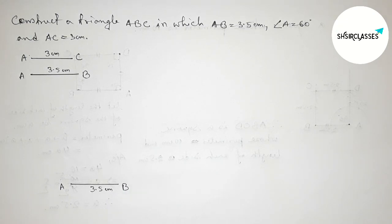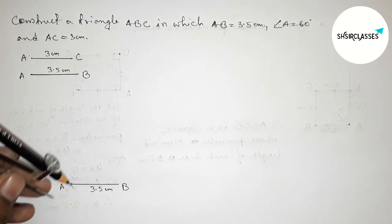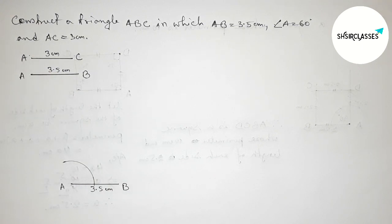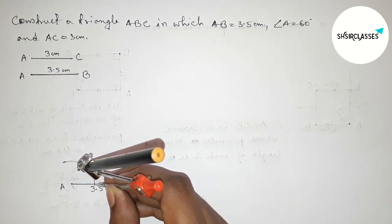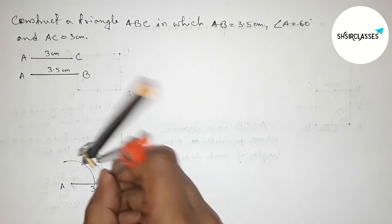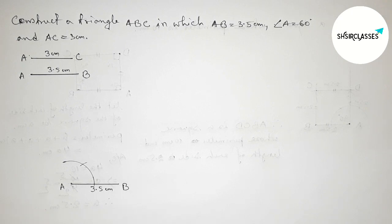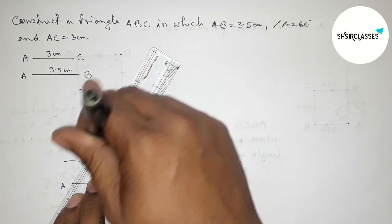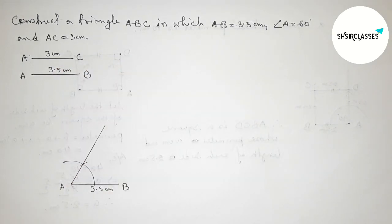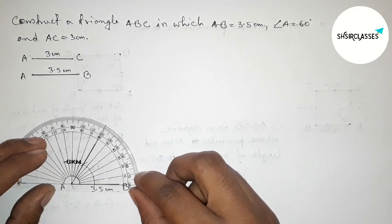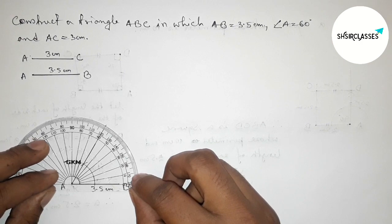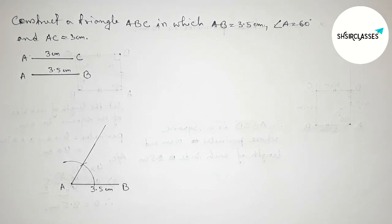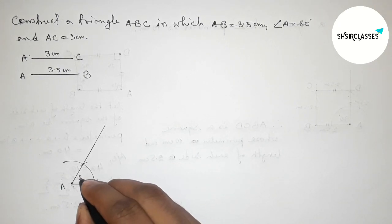Next, drawing a 60 degree angle at point A. Putting the compass on point A and taking any length, drawing an arc. Then putting the compass on that arc point, taking the same length, and cutting another arc. Joining this line gives a 60 degree angle. Checking with the protractor — this is perfectly a 60 degree angle. So angle A equals 60 degrees.